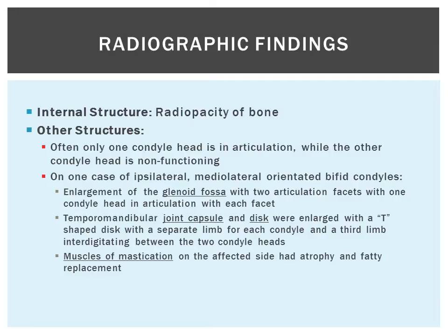There was one case of a medial-lateral oriented bifed condyle where the authors performed many CT scans. In that patient, there was an enlarging of the glenoid fossa with two articulation facets, and one condylar head in articulation with each facet. There was also an enlarged joint capsule and disc to accommodate the two heads, a T-shaped disc with a separate limb for each condyle, and a third limb interdigitating between the two condylar heads. The authors also noted that the muscles of mastication on the affected side had atrophy and fatty replacement.